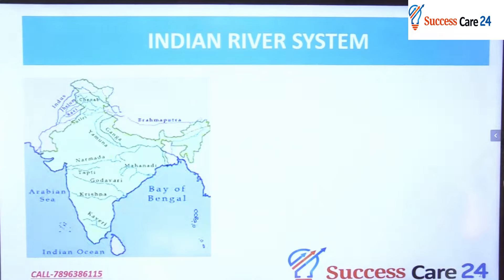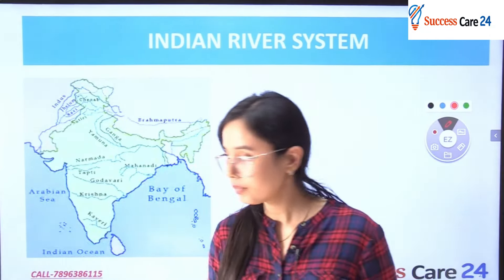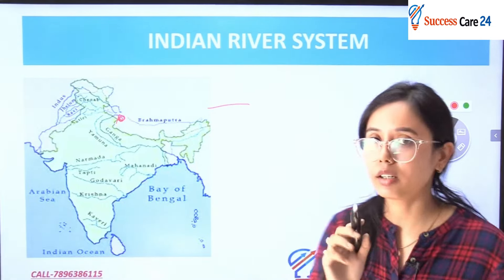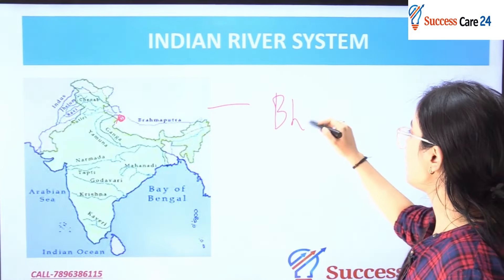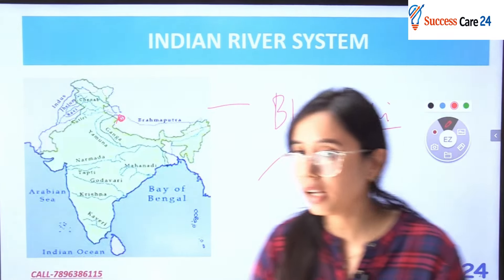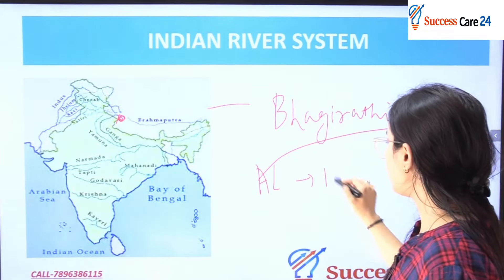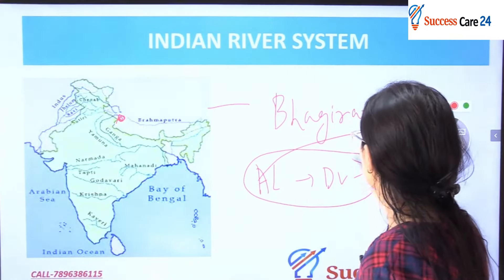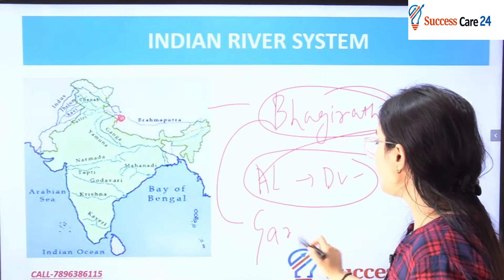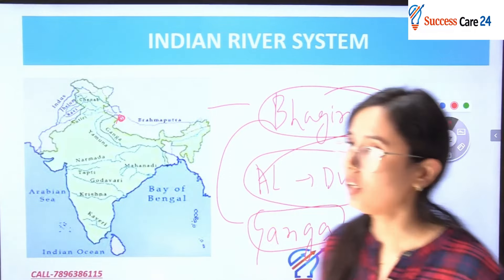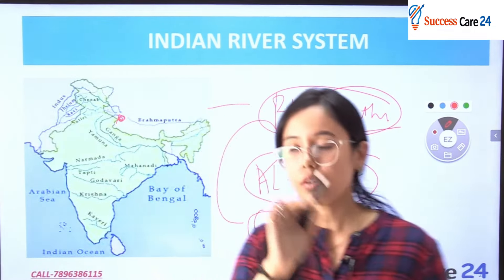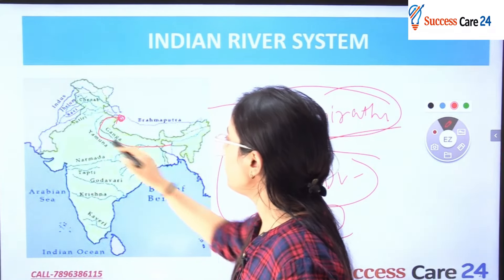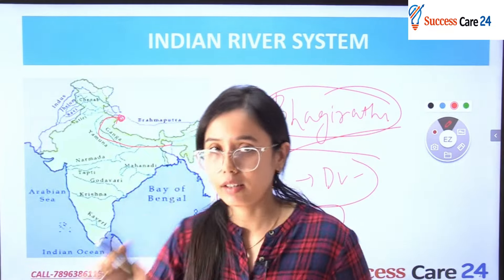Next is the Ganga River System. Ganga originates from the Gangotri Glacier — specifically Gomukh — but at that point it is not named Ganga; it is named Bhagirathi. Bhagirathi meets Alaknanda at Devprayag, and from that confluence onwards it becomes the Ganga. It then enters the plains at Haridwar.